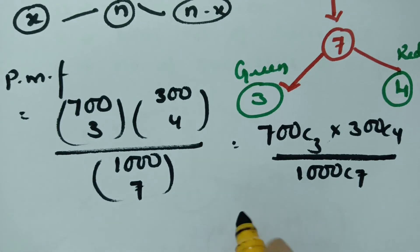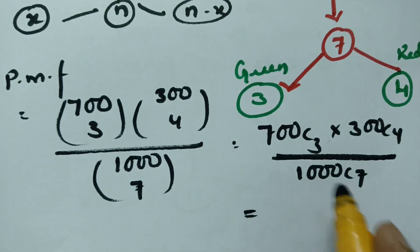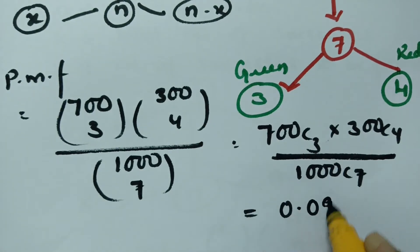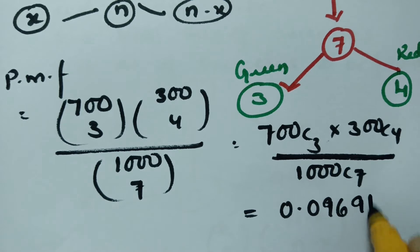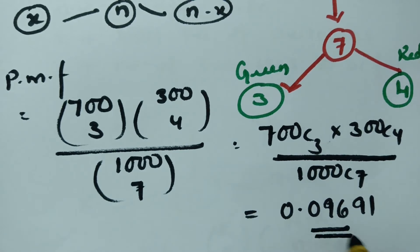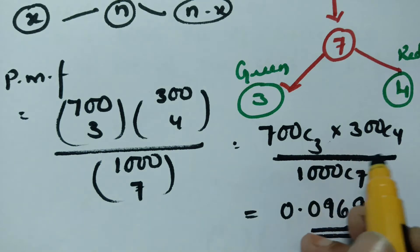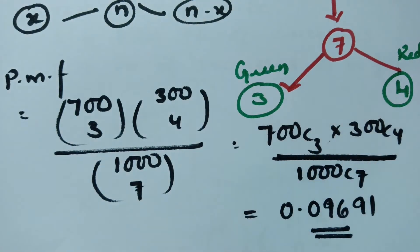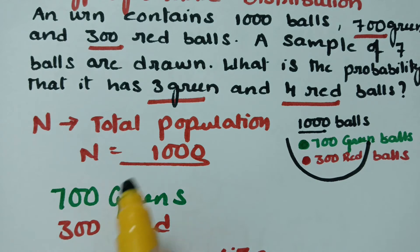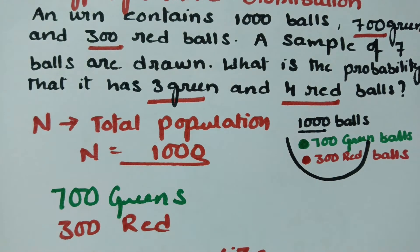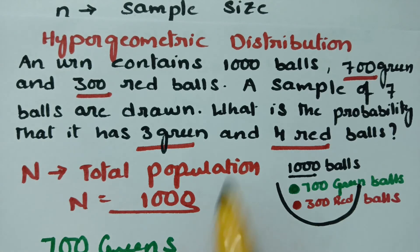The final answer is 0.09691. Note that according to the binomial distribution framework, sampling with replacement uses binomial distribution, while sampling without replacement uses hypergeometric distribution. This is a without-replacement problem, solved using hypergeometric distribution.